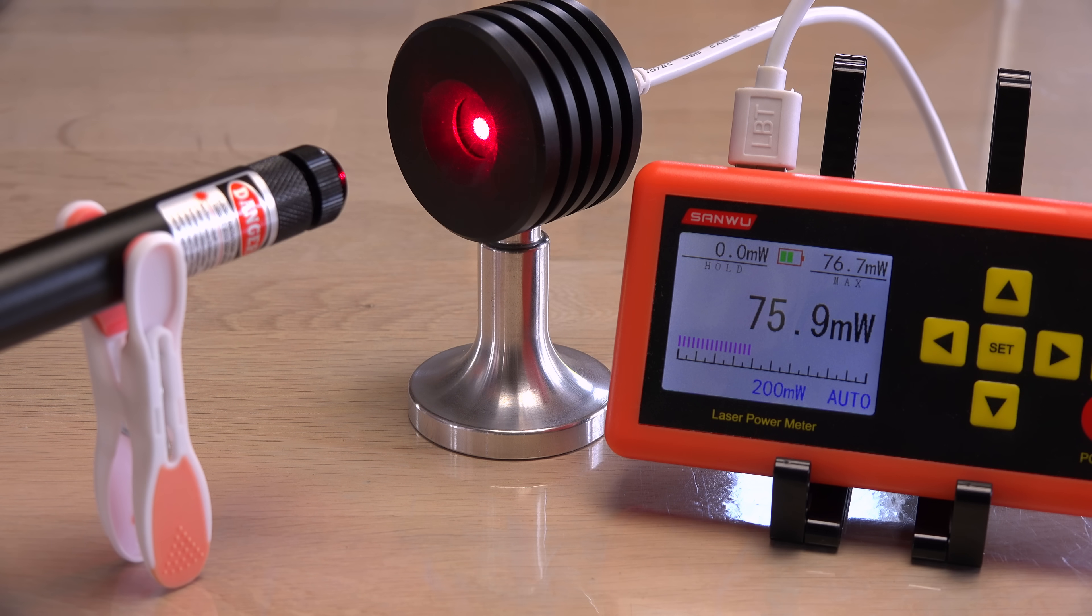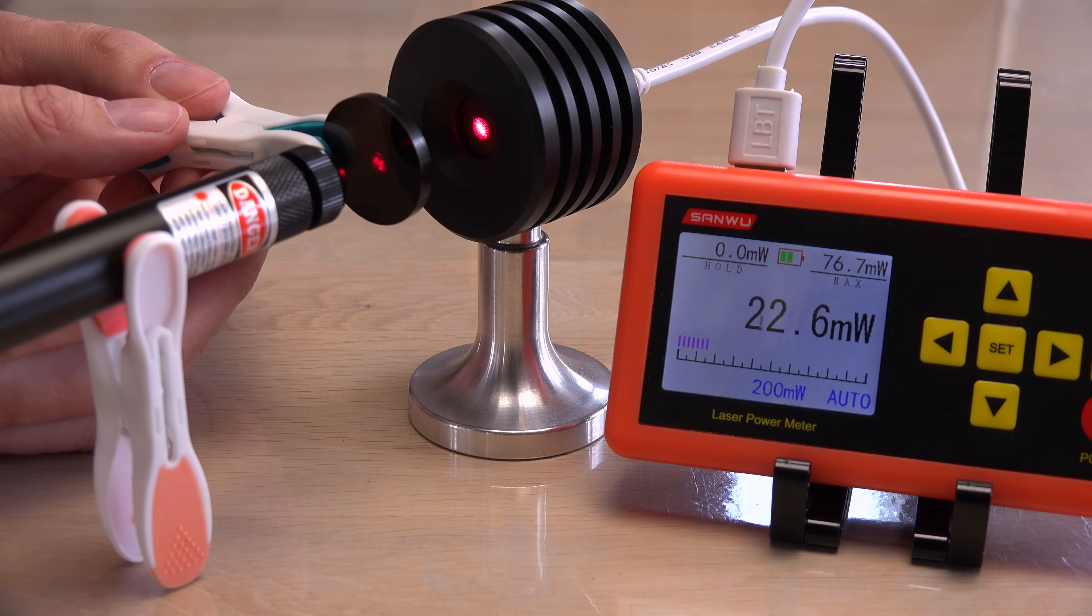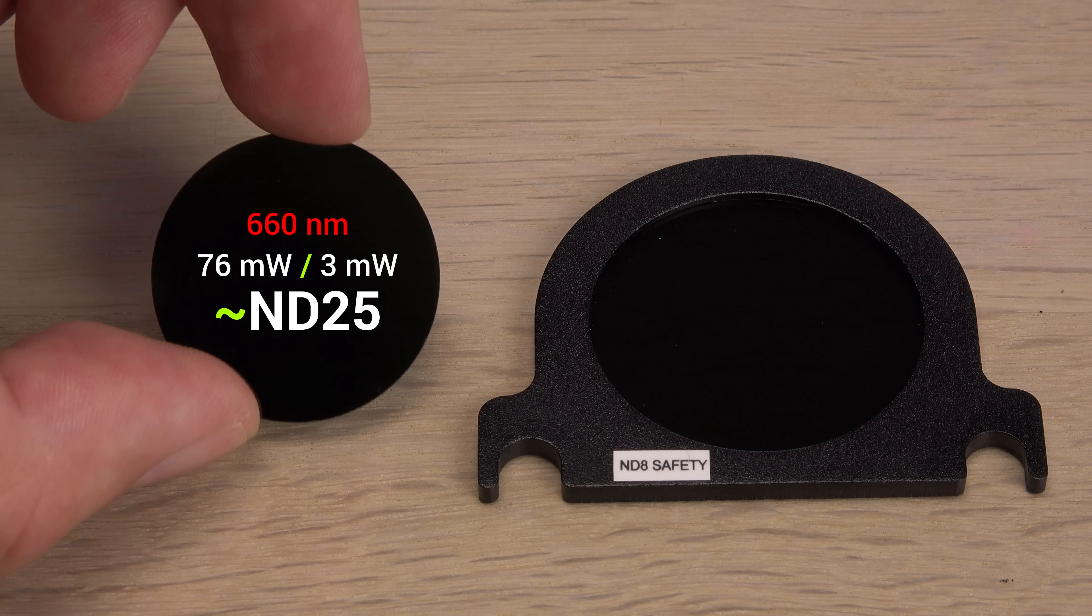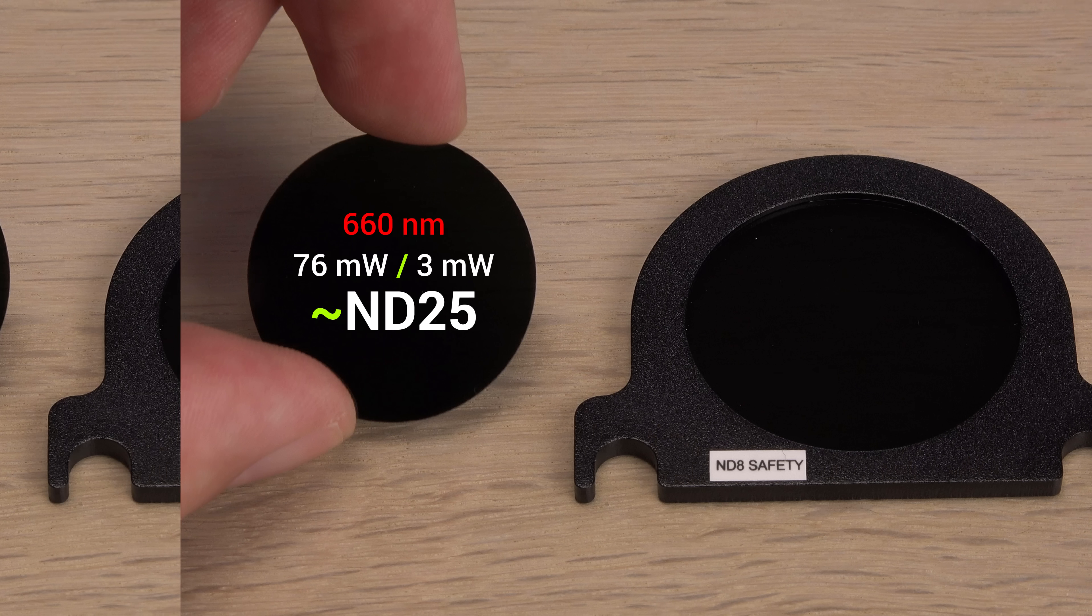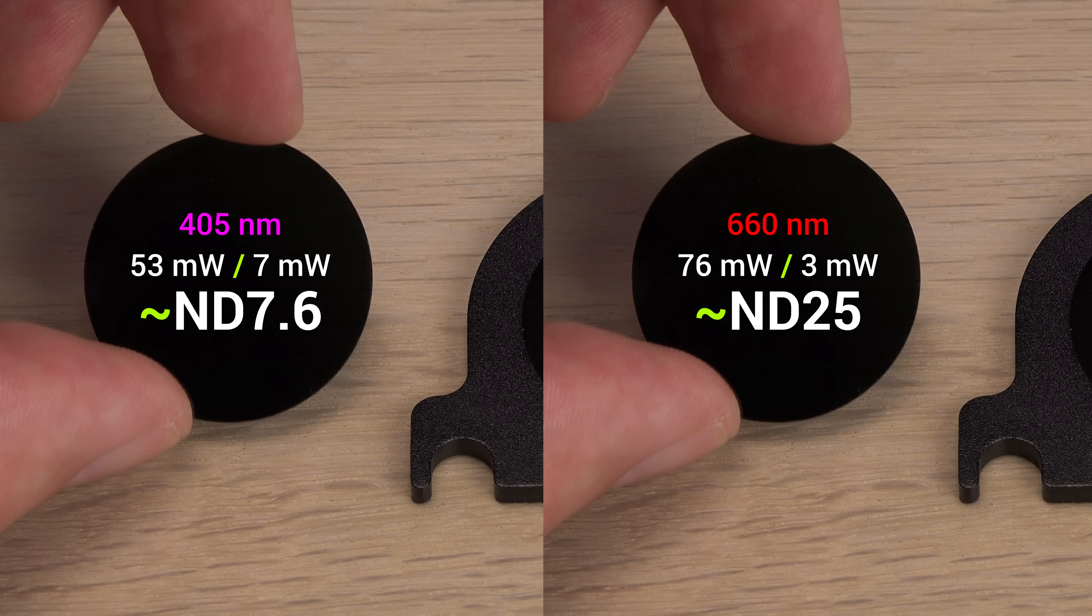How about the other one? Woah! Alright. For red, this filter really does filter. Going from 76 to 3 milliwatts equals ND25. What an odd filter, not neutral at all between red and violet.